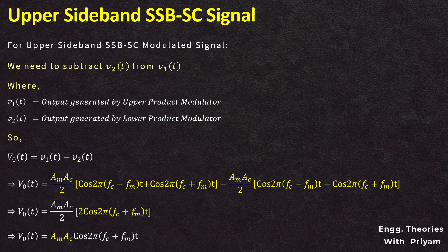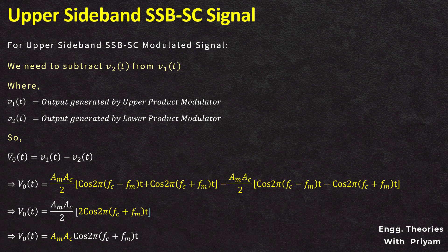Using the phase discrimination technique, we are able to generate both upper sideband and lower sideband SSBSC modulated signals. However, one main drawback is that the phase shift must be exactly 90 degrees, which is almost impossible to achieve in practice. The phase shift is generally less than 90 degrees due to losses and resistance in the circuit, which prevents proper output from the lower product modulator. Additionally, for multi-tone message signals it is very difficult to maintain exactly 90 degrees of phase shift, making this method not applicable for multiple-tone message signals.